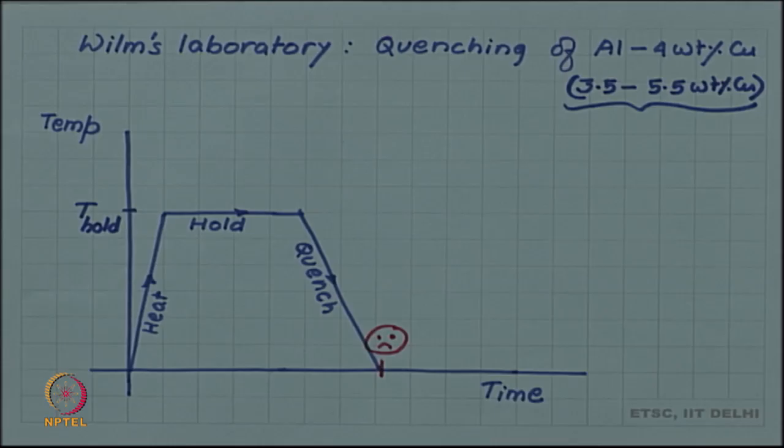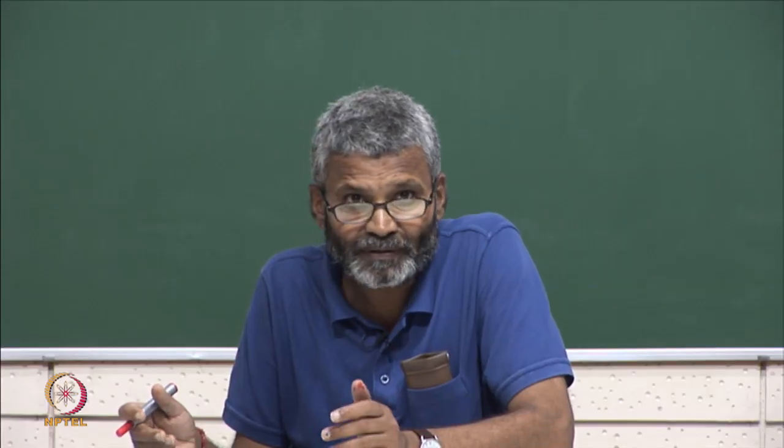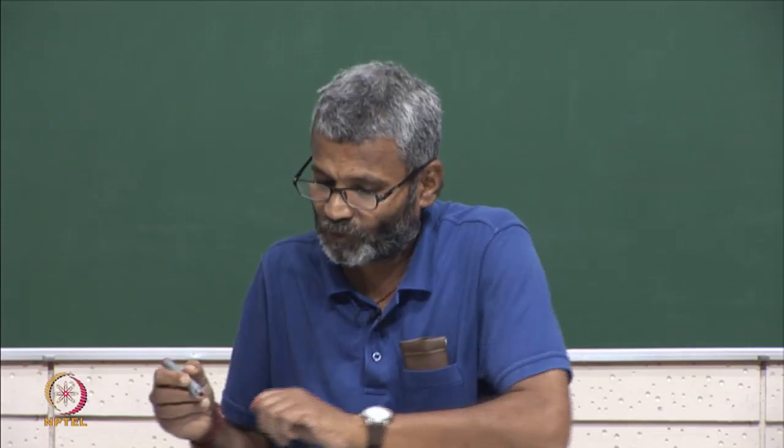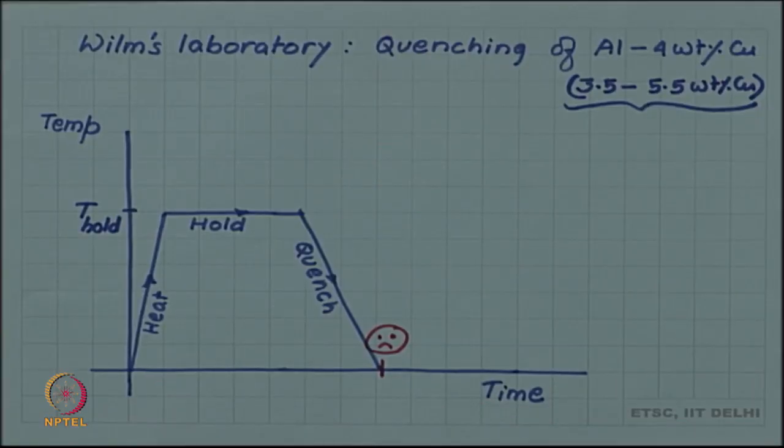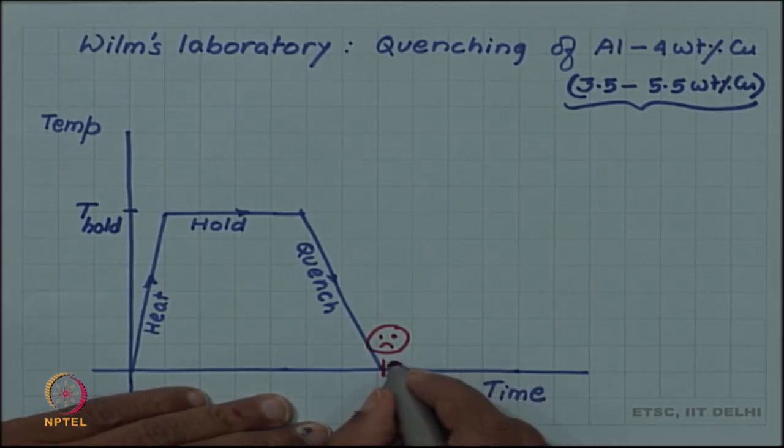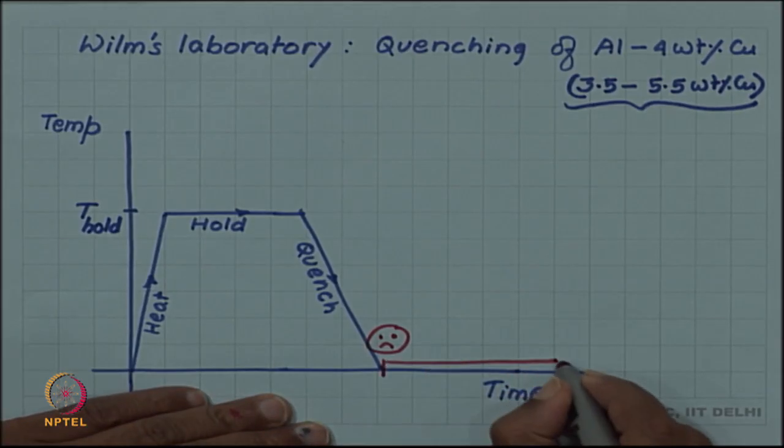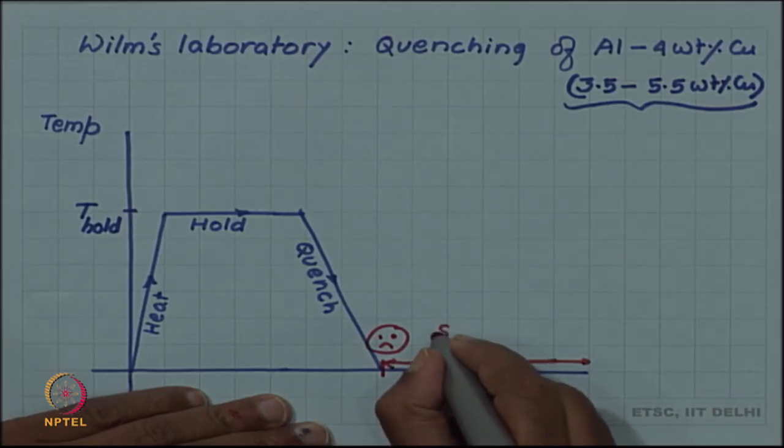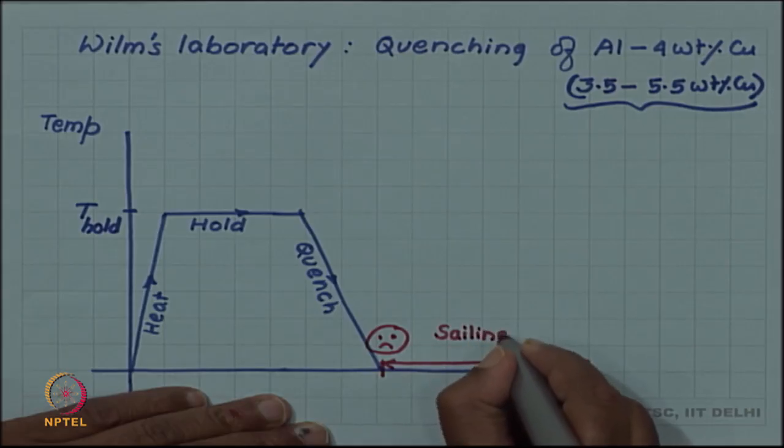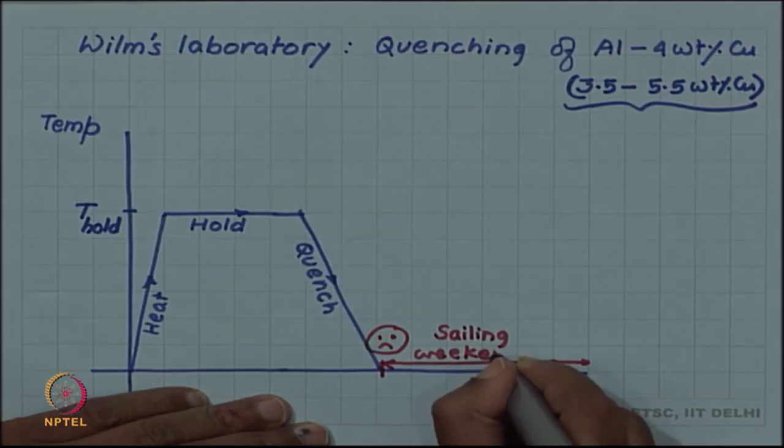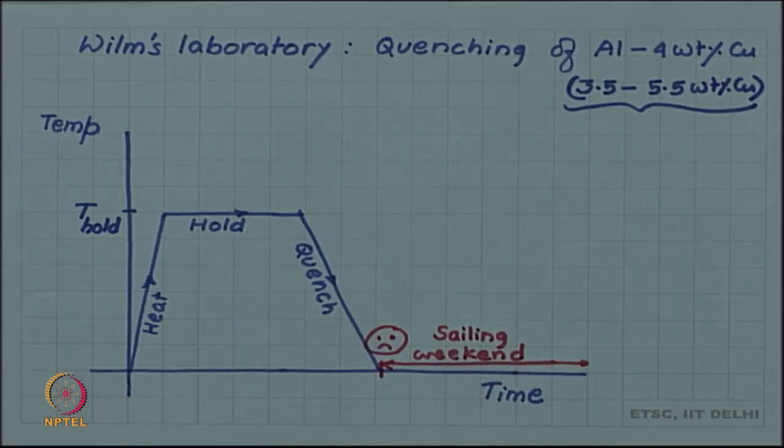He wondered about this and tried to repeat the experiment again. He freshly quenched the same specimen under same condition again on Monday and measured the hardness, there was no increase in hardness. Then it struck him is it because, is it the weekend effect, is it because he quenched the specimen on Saturday and is measuring the hardness on Monday that is he is allowing this period of weekend, this sailing weekend that hardness is increasing.